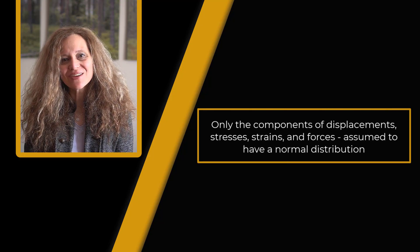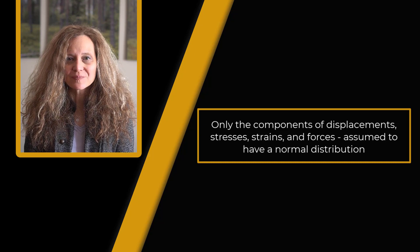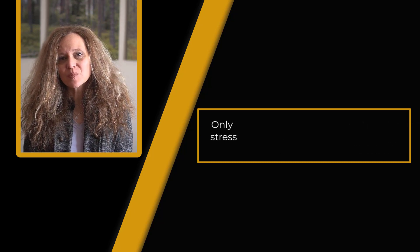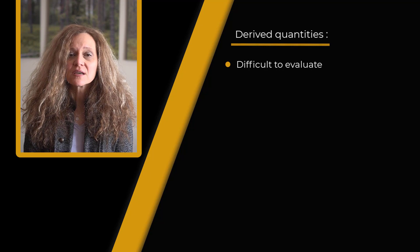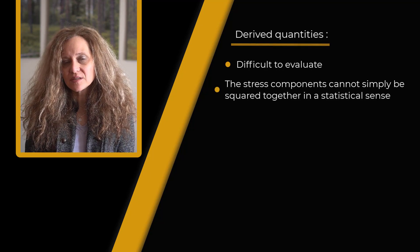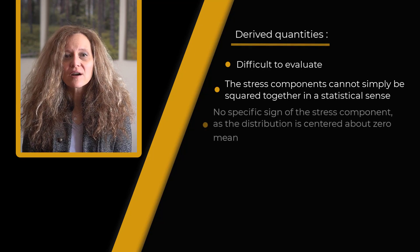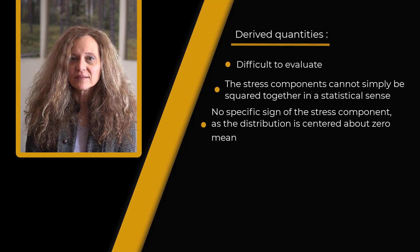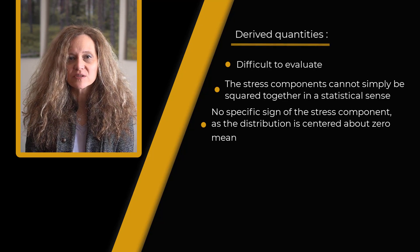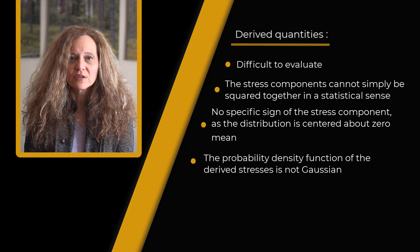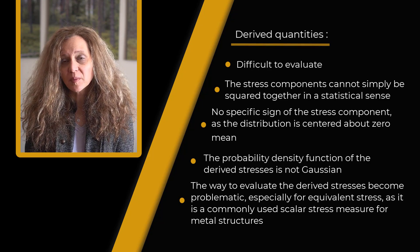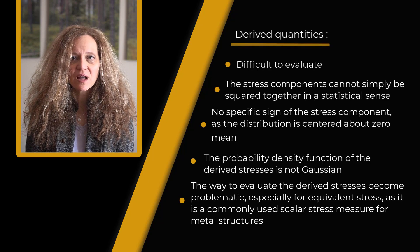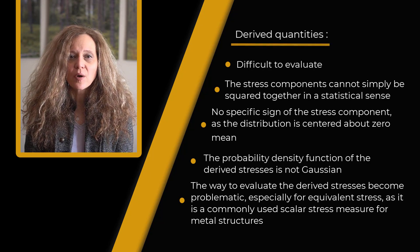This discussion applies only to the components of displacement, stresses and strains and forces which are assumed to have normal distribution. The derived quantities such as principal stresses, stress intensity and equivalent stress cannot be easily evaluated because the stress components cannot simply be squared together in a statistical sense. There is no longer any specific sign of the stress component as the distribution is centered about zero mean and the probability density function of the derived stress is not Gaussian. The way in which derived stresses should be evaluated becomes problematic, especially since equivalent stress is a commonly used stress measure in evaluating the response of metal structures.